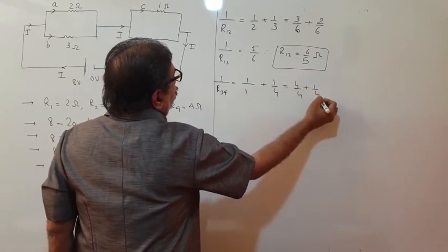Instead, we first find the equivalent resistance of each parallel pair. For R1 and R2 in parallel: 1/R12 = 1/2 + 1/3. The LCM is 6, so 1/R12 = 3/6 + 2/6 = 5/6. Therefore R12 = 6/5 ohm.